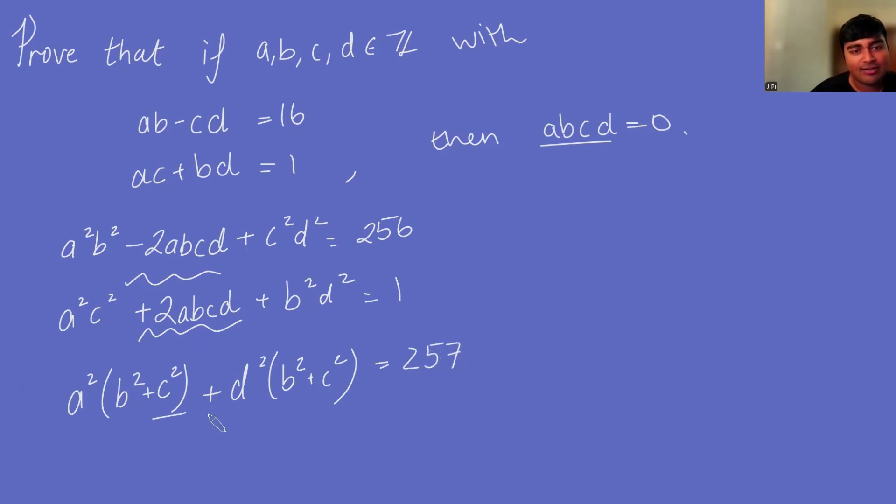Okay, well, I can actually just factor out b squared plus c squared from both these terms. So I'm going to get b squared plus c squared times a squared plus d squared, and this equals 257.